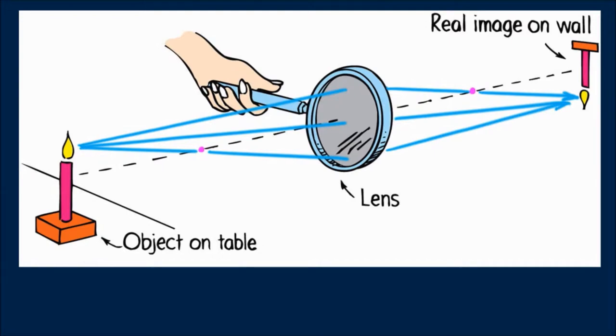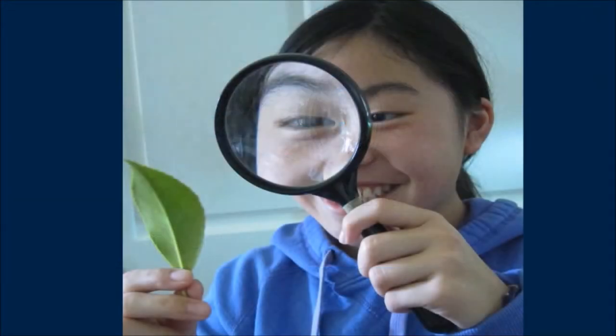The simplest use of a converging lens is a magnifying glass. Sydney uses a magnifying glass to examine the structure of a leaf. The leaf is inside the focal length of the magnifying glass, so she sees an enlarged, upright image.